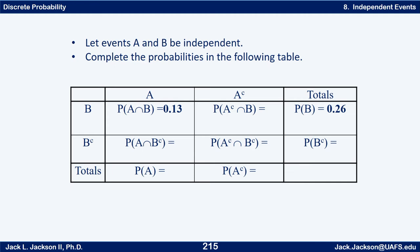Now suppose A and B are independent events and you're given that the probability of A intersect B is 0.13 and the probability of B is 0.26. Can you fill out the rest of this table? It turns out there is enough information to do that if we know the extra information that A and B are independent events. Go ahead and finish this out.